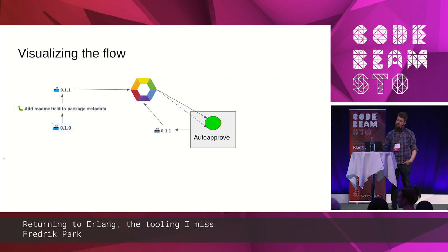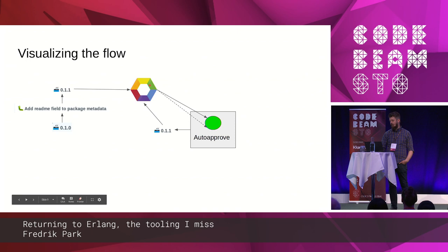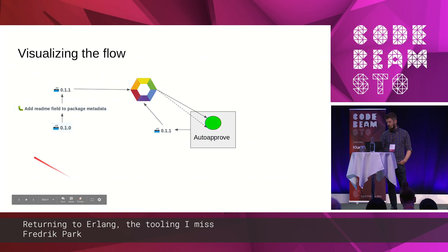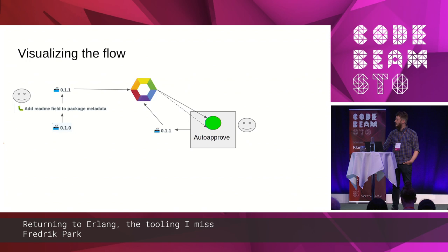If you visualize the whole flow: someone does a change, that change gets pushed into Hex. Then Greenkeeper or Renovate creates a new PR. Through the auto-approve tool, you can tell it this is perfectly fine. The new package gets pushed into Hex, which in turn triggers a new update if there are dependencies on it. You basically have a small loop going until everything is approved. The nice thing is that you only need to do two actions in this loop and you suddenly have updated the whole system.